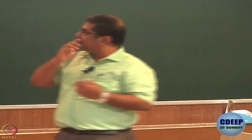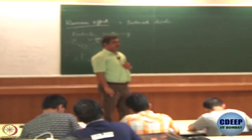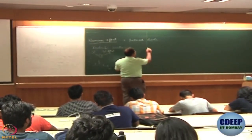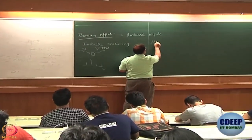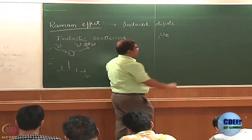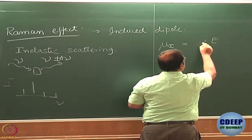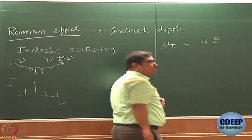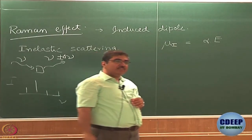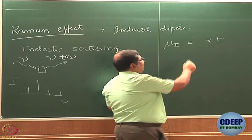Raman spectroscopy is about the interaction of induced dipoles with the electric field of light. The induced dipole moment, written as mu_i, equals the electric field multiplied by a constant alpha. Alpha is called the polarizability.